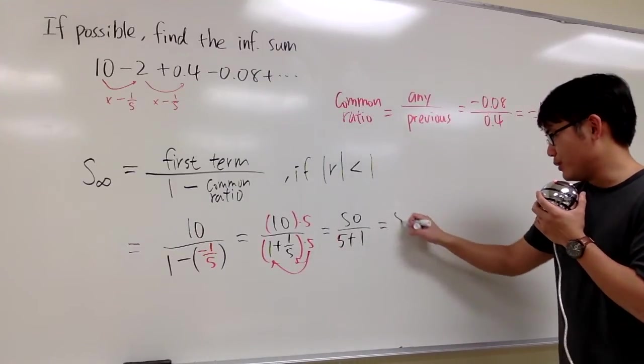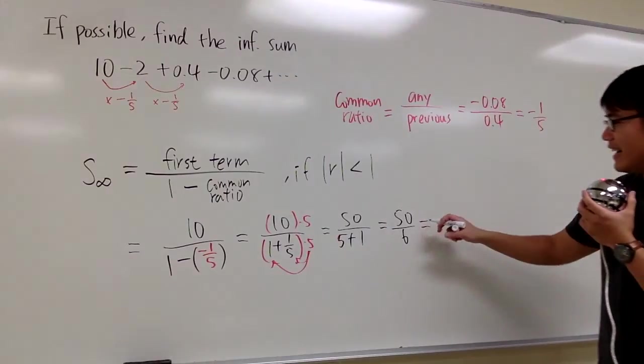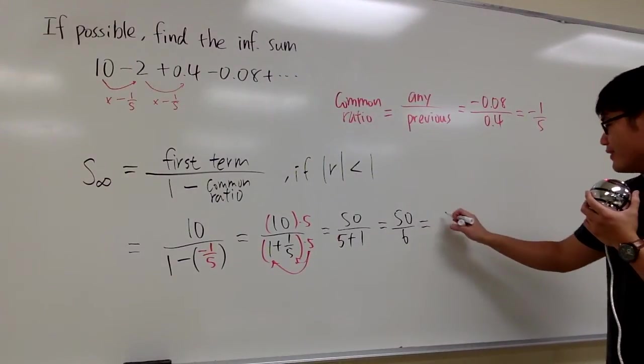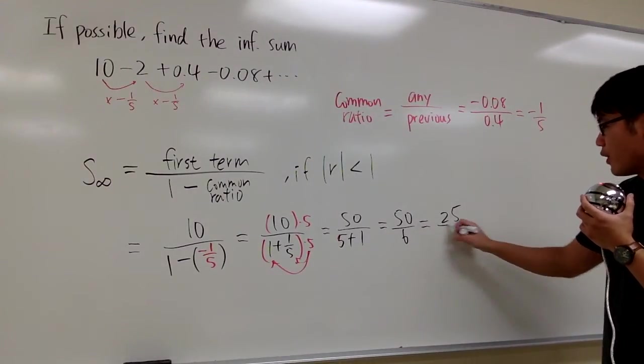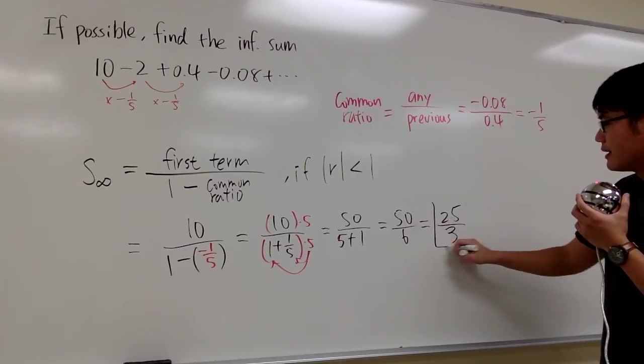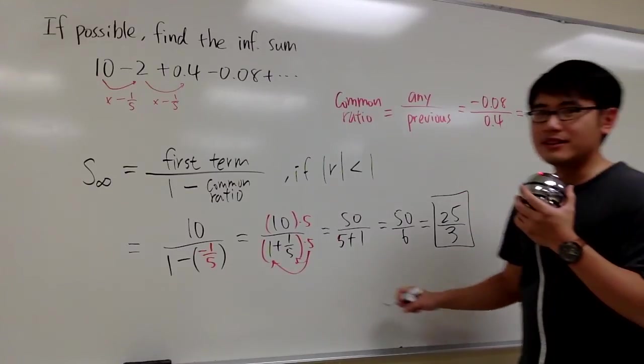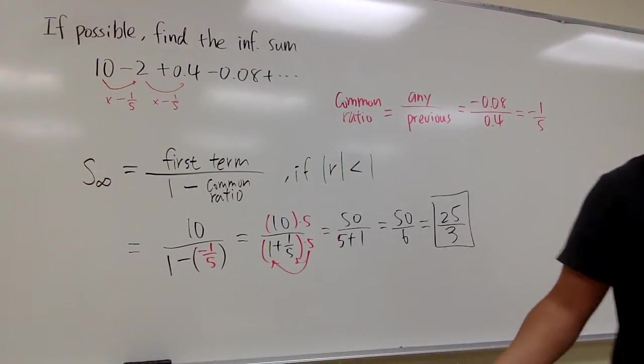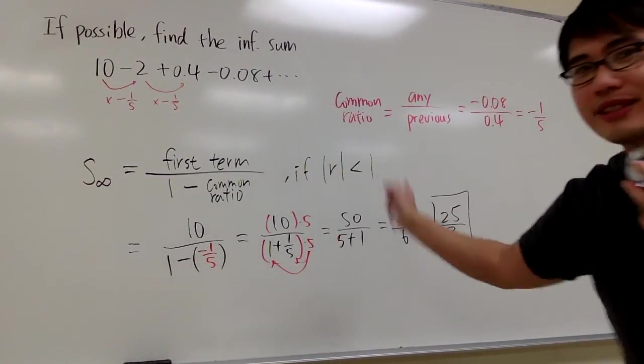Just keep continuing: 50 over 6, then divide by 2 on top and bottom, and therefore we get 25 on top over 3 on the bottom. This will be the infinite sum for this infinite geometry series. The series converges.